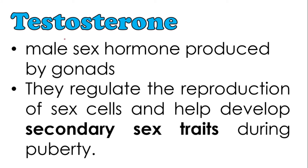The first term is testosterone. Testosterone is the male sex hormone produced by the gonad. The roles of testosterone are: first, it regulates the reproduction of sex cells; and second, it helps develop secondary sex traits during puberty.